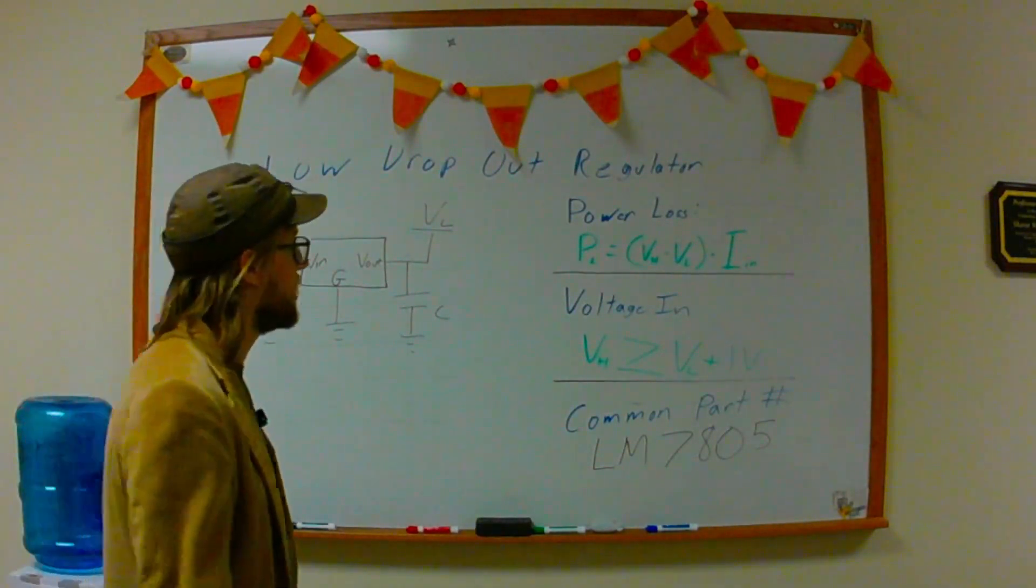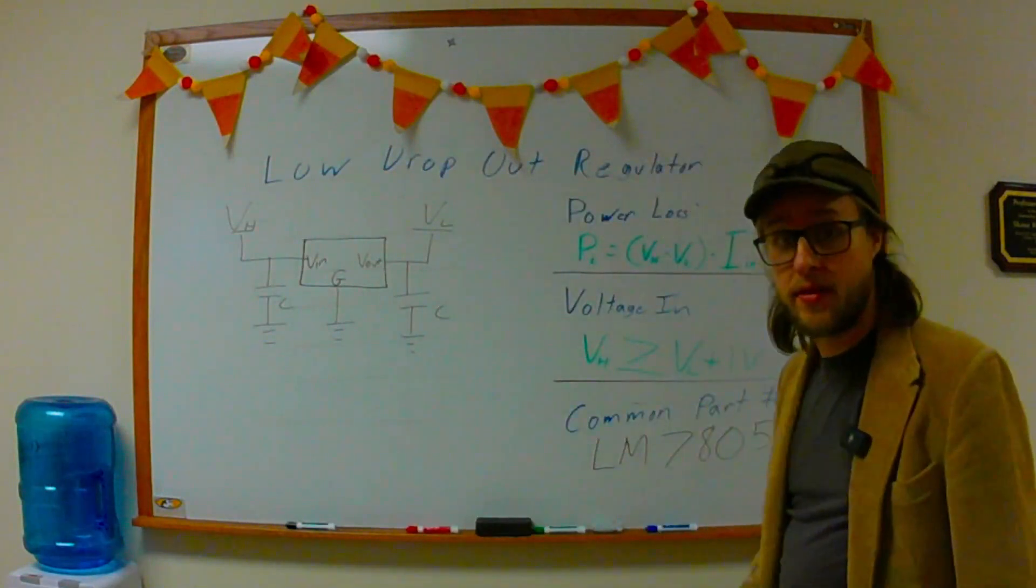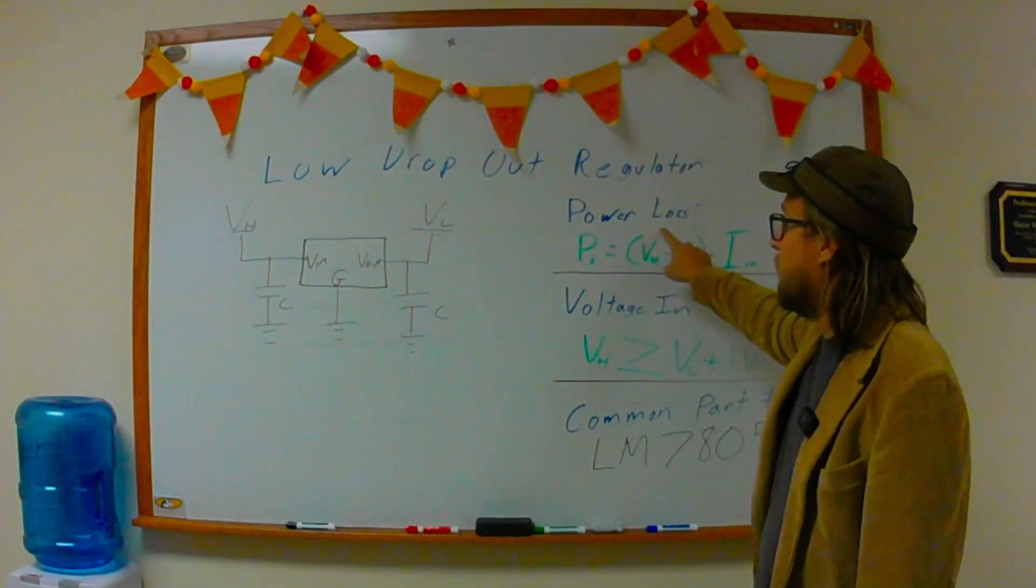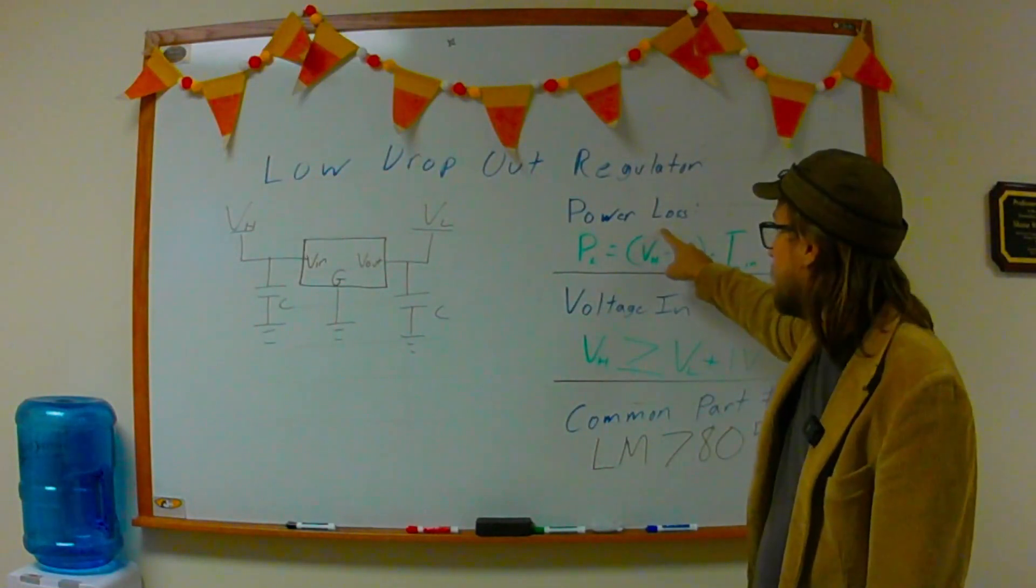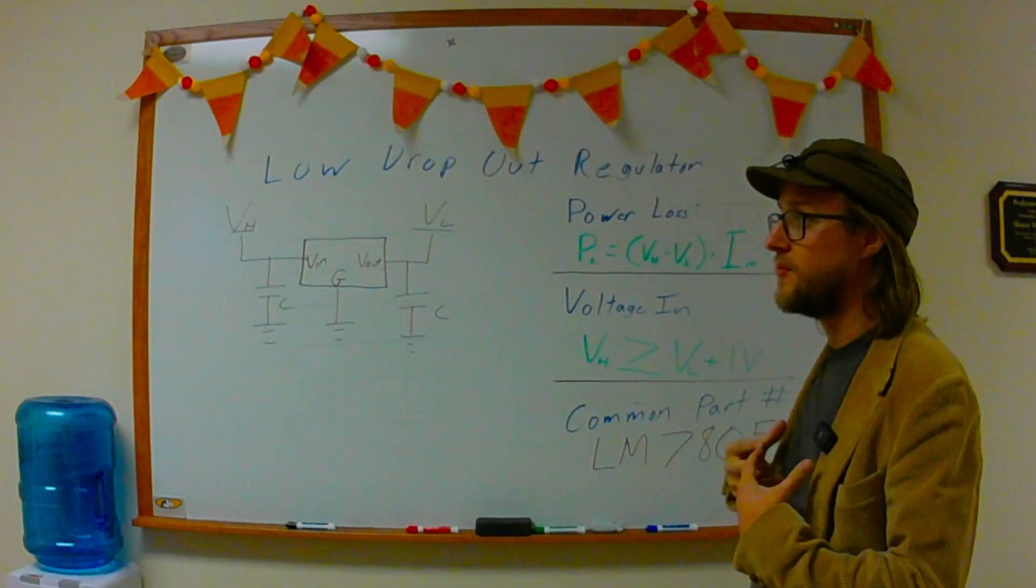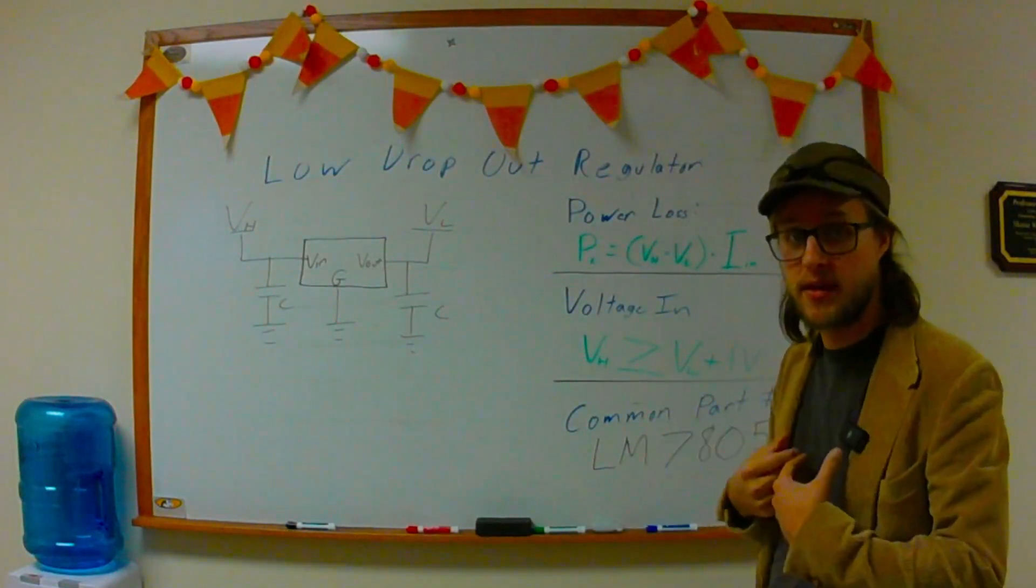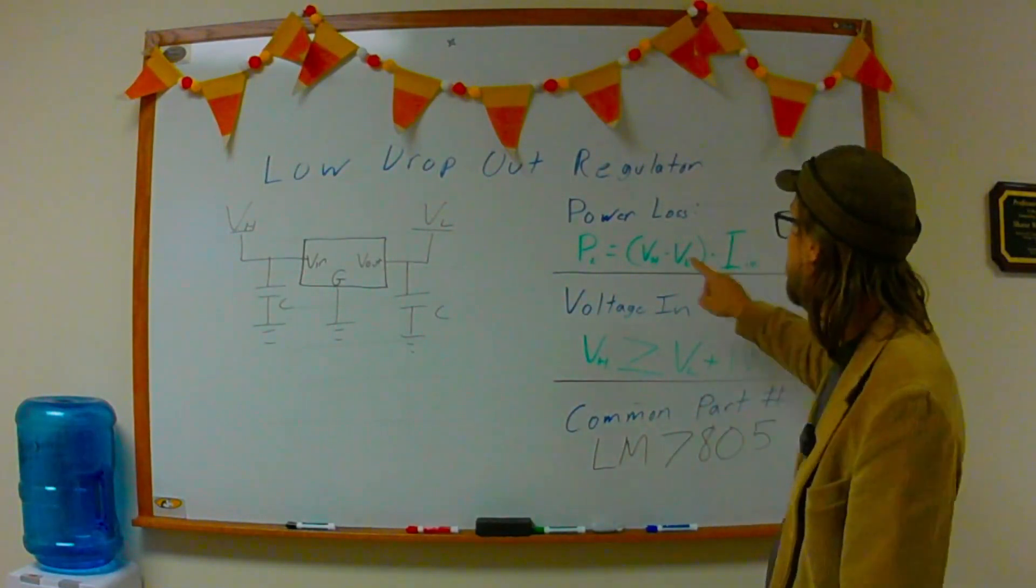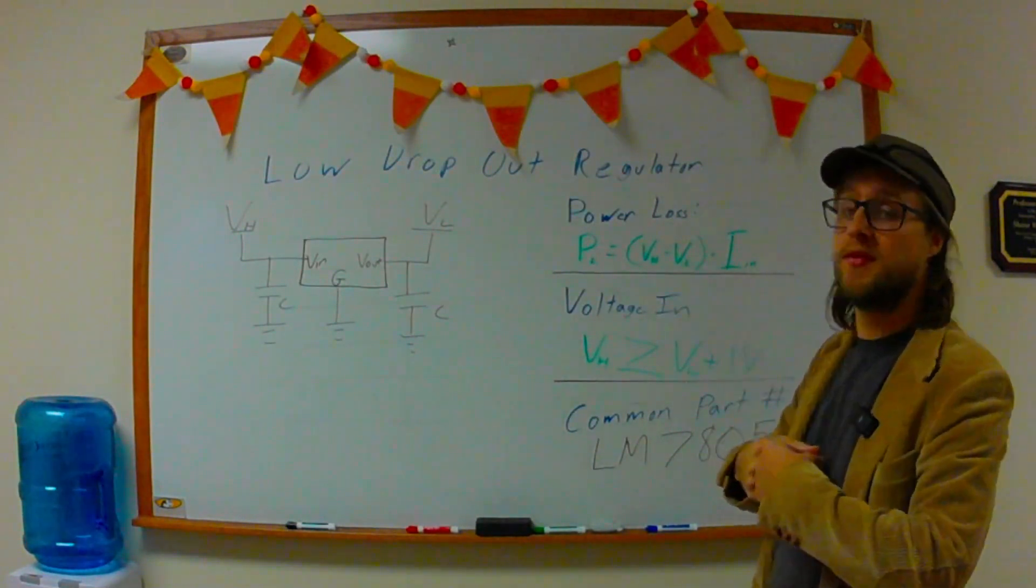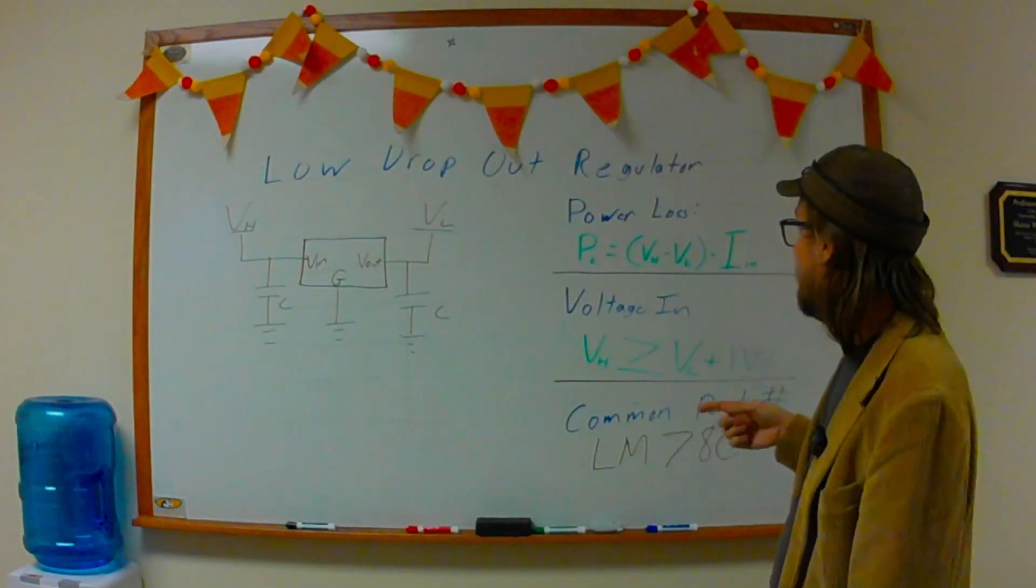But the thing I really want to point out is why we had that big difference in thermal energy. The way the low dropout regulator works is it takes the difference that we need in our voltage, so I'm feeding in some bigger voltage and cutting it down to a smaller voltage, it takes that difference and just brunt it off as heat.